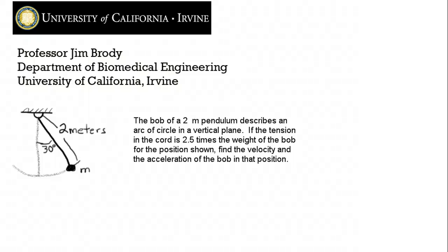Today's problem: the bob of a 2 meter pendulum, so that's a 2 meter long string here, describes an arc of a circle in a vertical plane. So it's moving back and forth this way in the vertical plane. If the tension in the chord is 2.5 times the weight of the bob for the position shown, find the velocity and acceleration of the bob in that position.